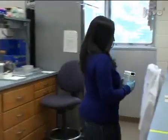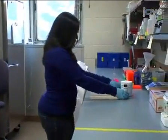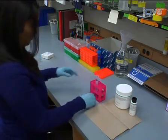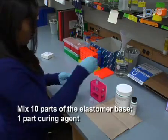To assemble injection slides, first prepare Silgard silicone elastomer according to the manufacturer's instructions. Mix 10 parts of the elastomer base with one part curing agent.